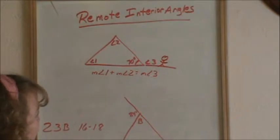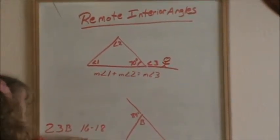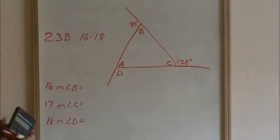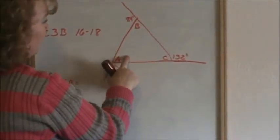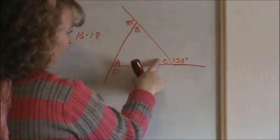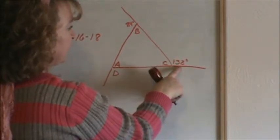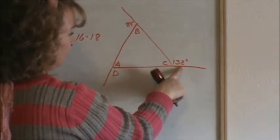Let's take a look at this problem to prove that. We're on 23B, 16 through 18. We have this triangle with angles A, B, and C. Let's look at angle C. We are told that this exterior angle is 132 degrees.